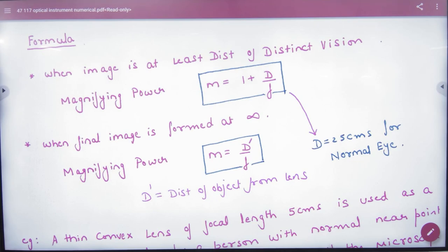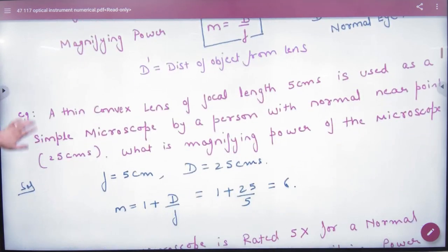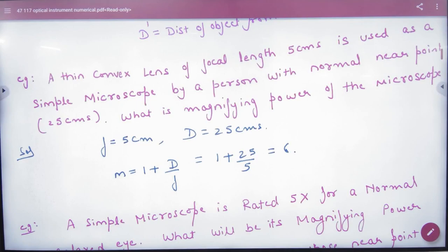So there are two formulas: one when the image is at least distance of distinct vision, and one when the image is formed at infinity. The first question: a thin convex lens of focal length 5 cm is used as a simple microscope.